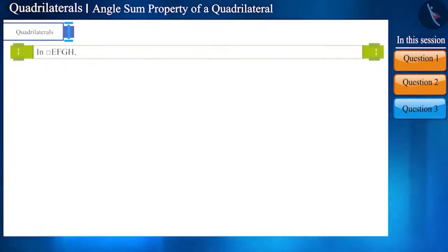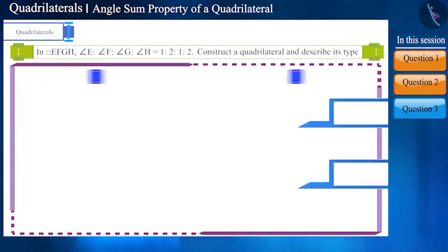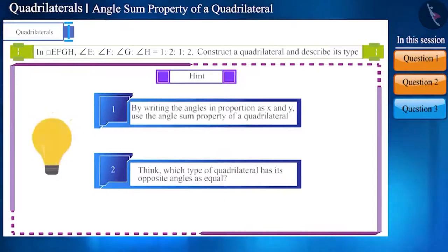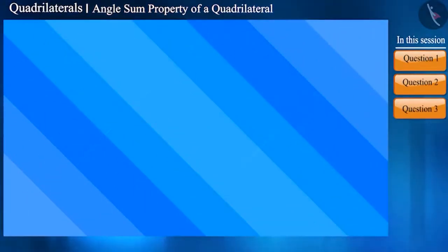The ratio of the angles of the quadrilateral EFGH is given as follows. Construct a quadrilateral based on the given ratio and describe its type. Friends, using this hint, try to solve this question on your own. Let us move on to the next question.